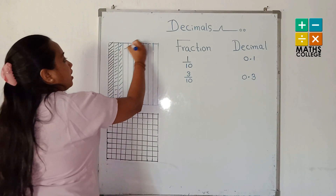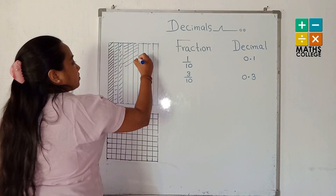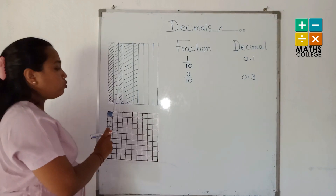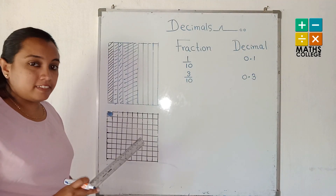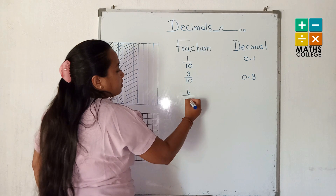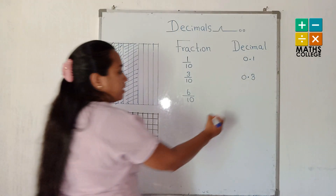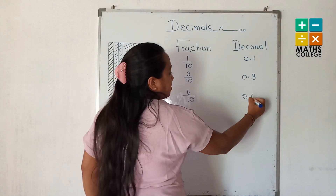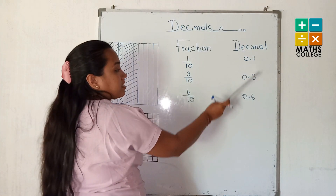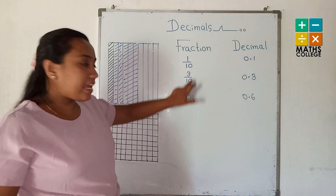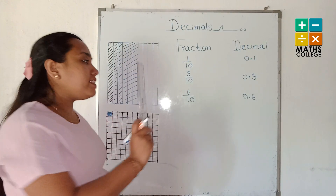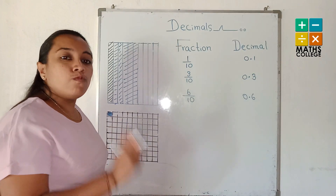Then, another three parts are colored. The total colored parts are six. Six are shaded. The shaded fraction can be written as six upon ten. As the decimal, it can be written as zero point six. All are the first decimal place. The denominator is ten, which has one zero. Therefore, the decimal number also has one decimal place.